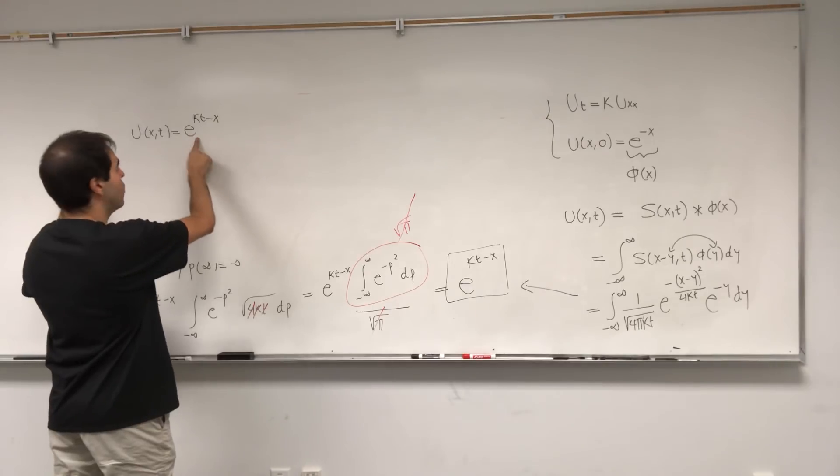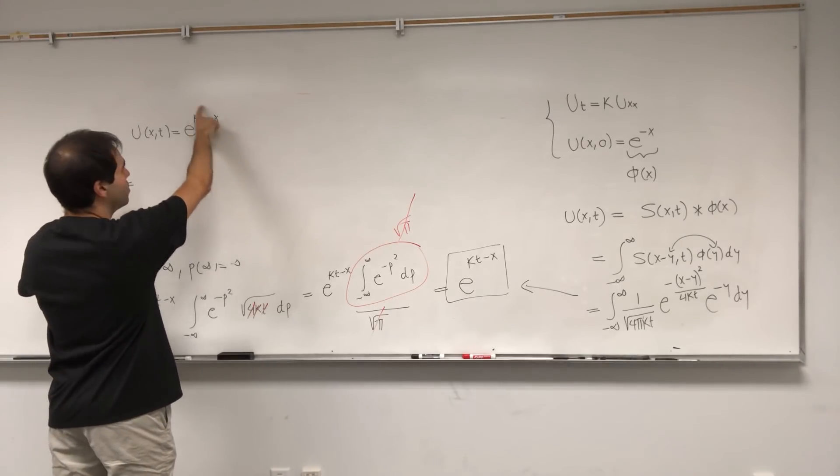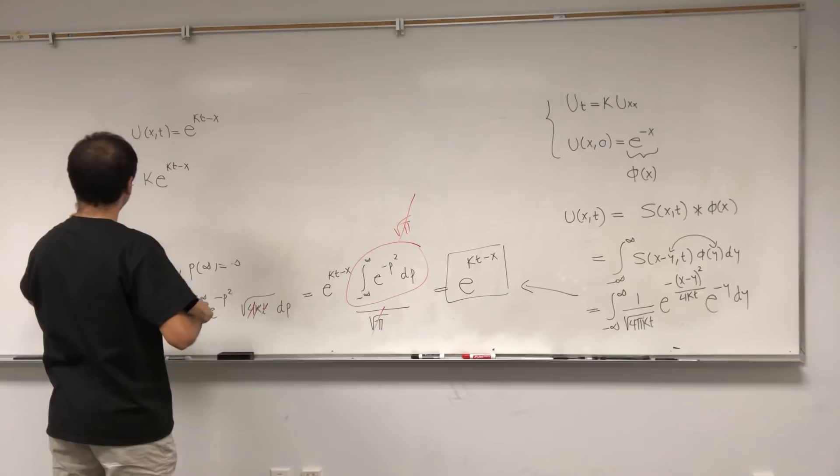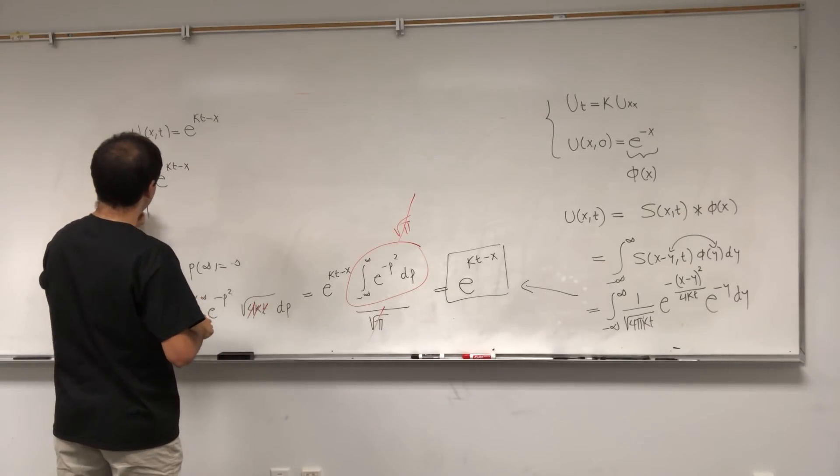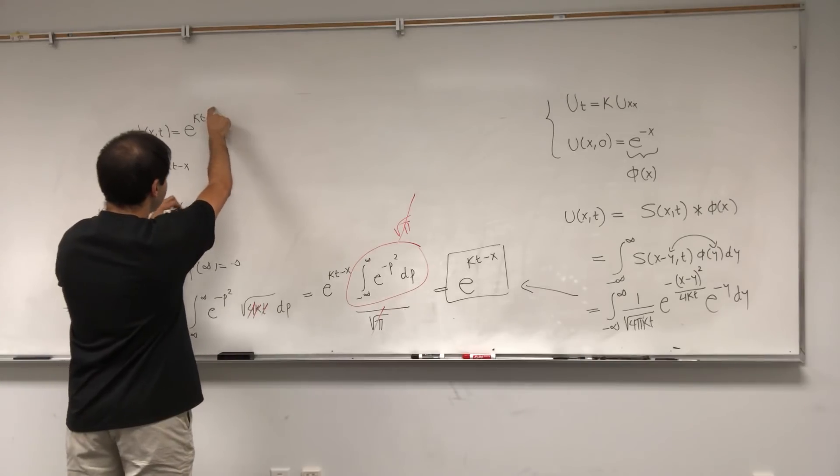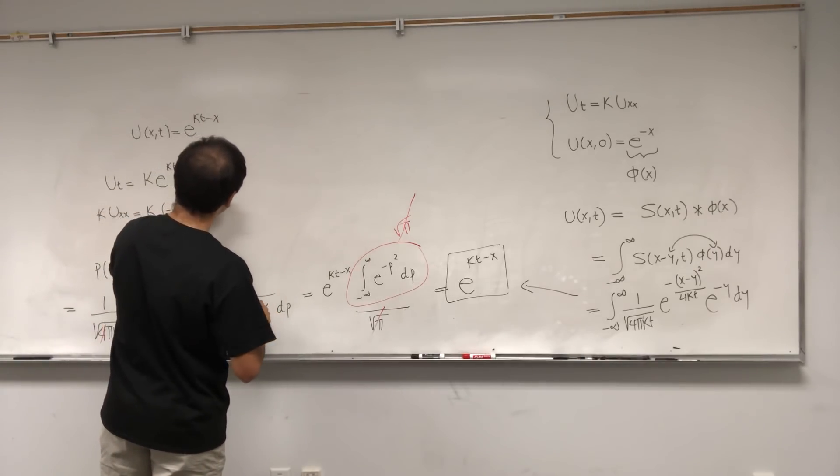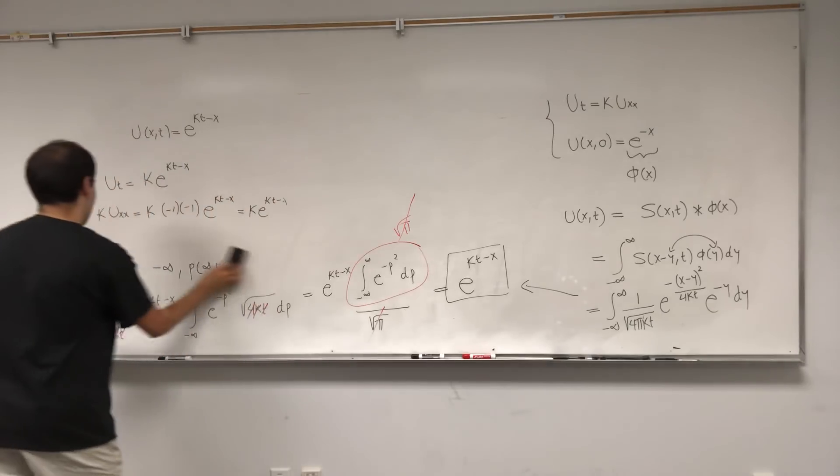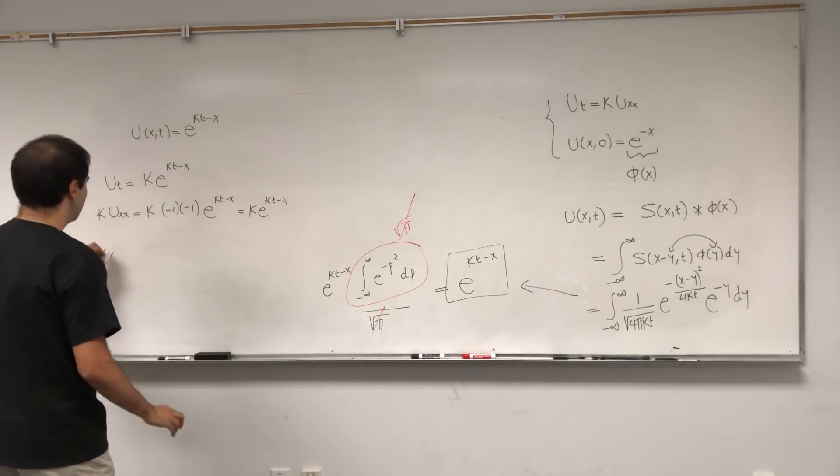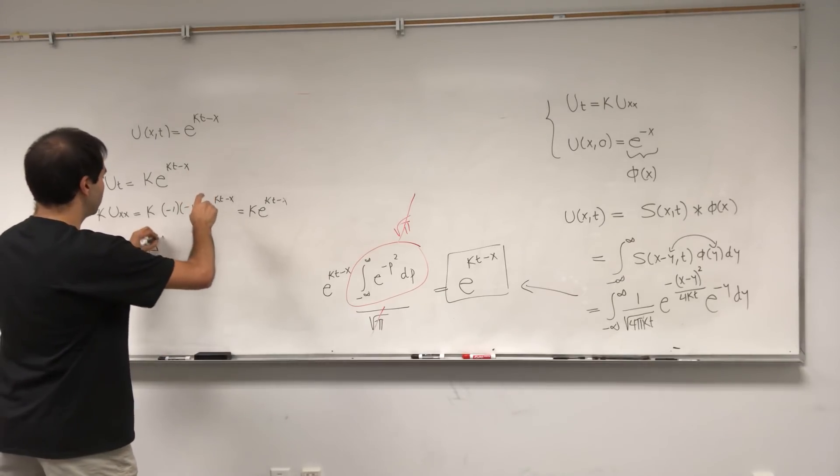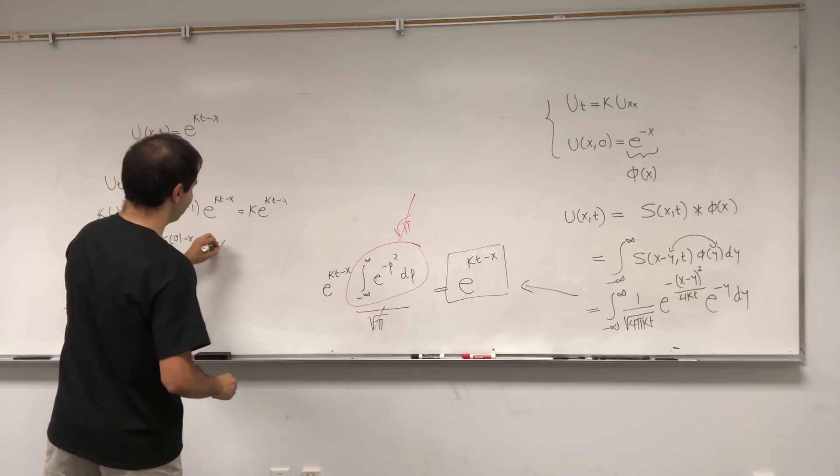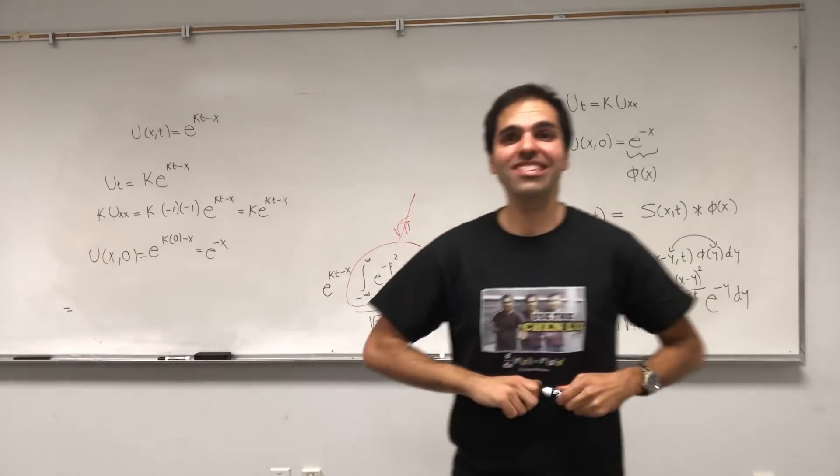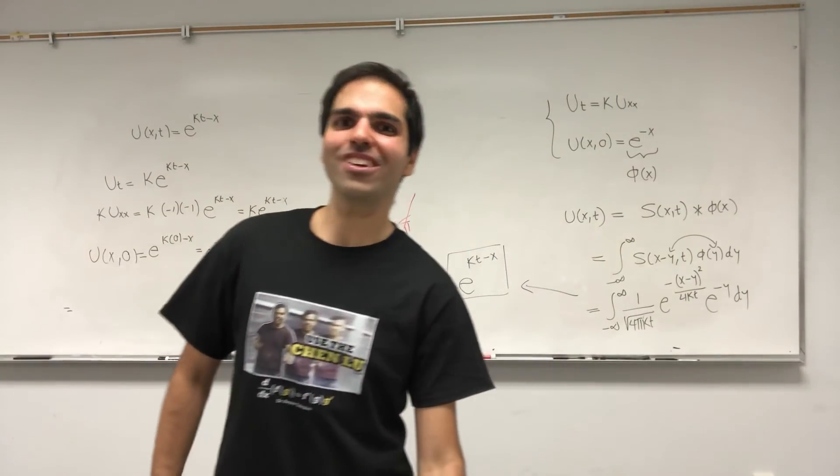And in case you're not convinced, well, let's calculate ut. That becomes a derivative of this with respect to t, so k e to the kt minus x. Let's calculate k uxx. Well, that's k times twice the derivative with respect to x, so minus 1 minus 1 e to the kt minus x, which is k e to the kt minus x. And lastly, what is the initial value? Well, if you plug in 0, you get e to the k0 minus x, which is e to the minus x, which is exactly the initial condition that we wanted. So see, math works and integrals are not for nothing.